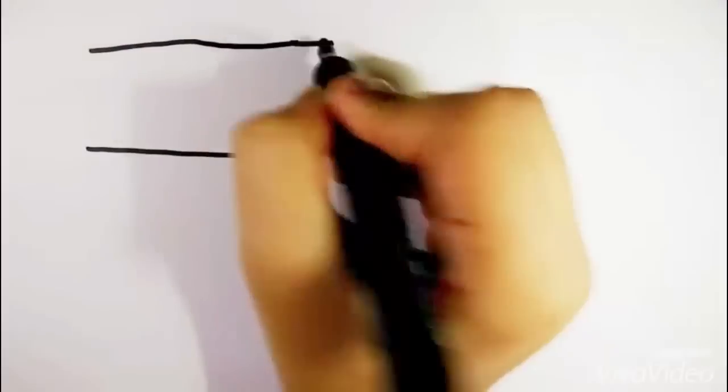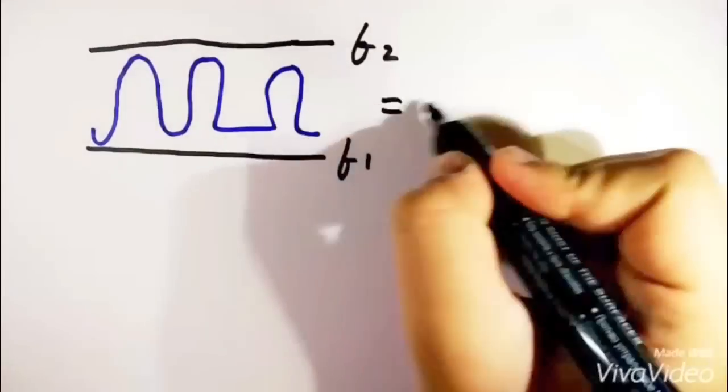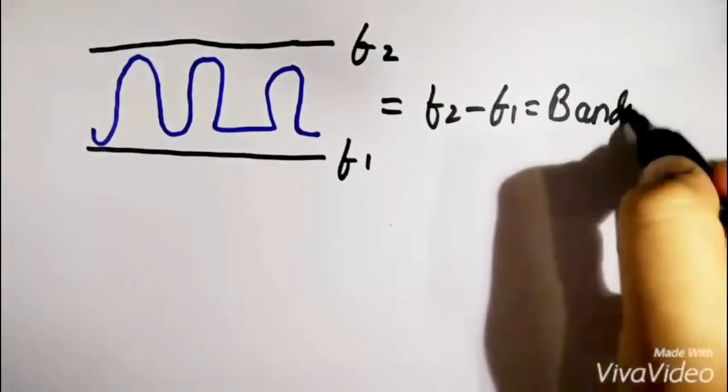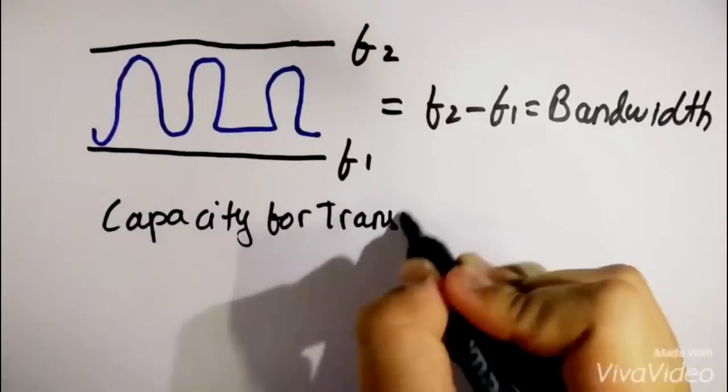Coming back to the original question of bandwidth, bandwidth is the frequency range over which a signal spans itself. Such type of bandwidth is measured in a unit known as Hertz.